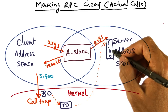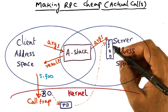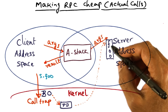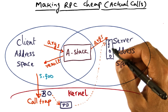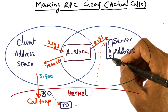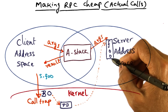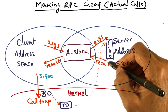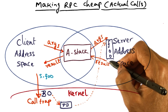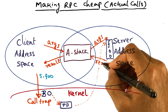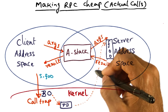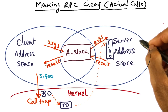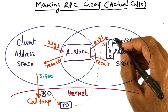Procedure foo is like any normal procedure. It finds the information it wants on the stack and does its job. Once it is done executing, it has to pass back the results to the client. What is going to happen is that the server stub is going to take the results of this procedure execution and copy them into the A stack. All of this action is happening in the server domain without any mediation by the kernel.